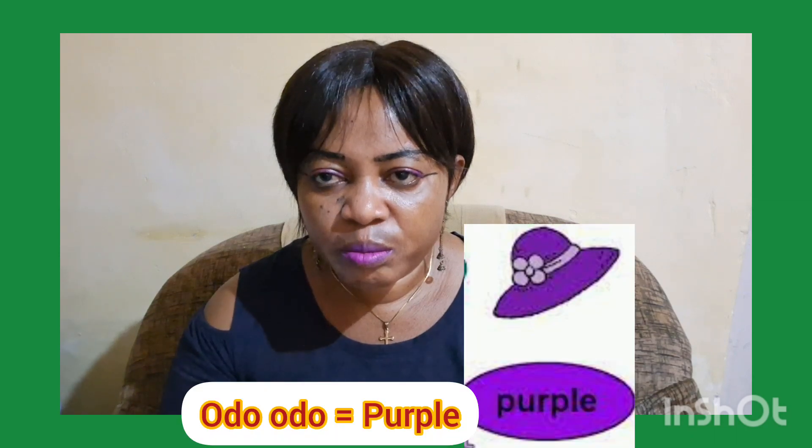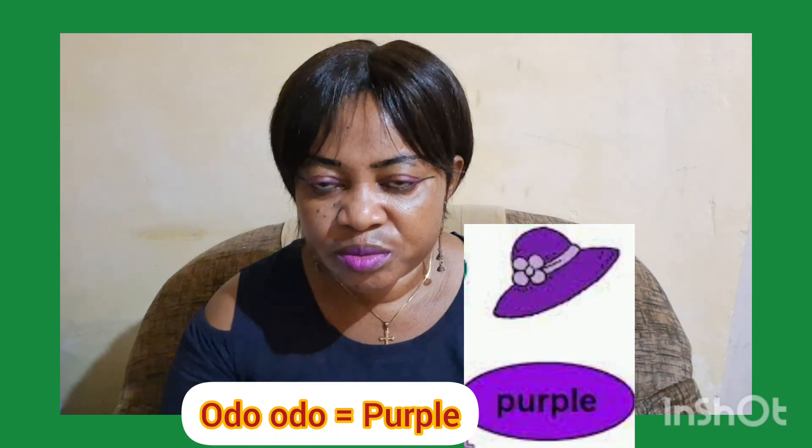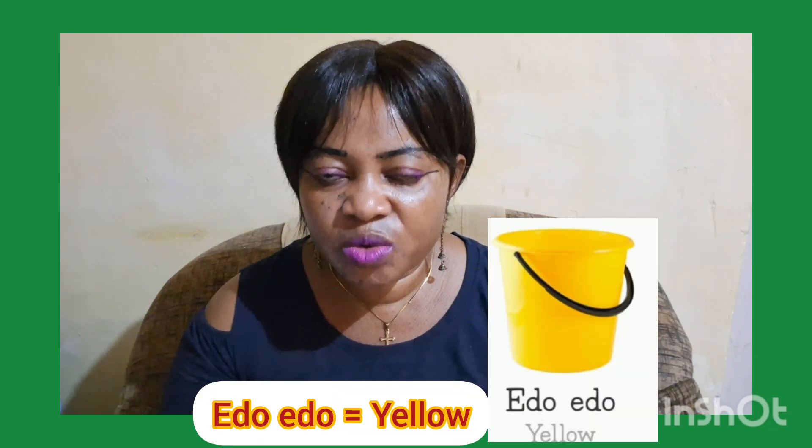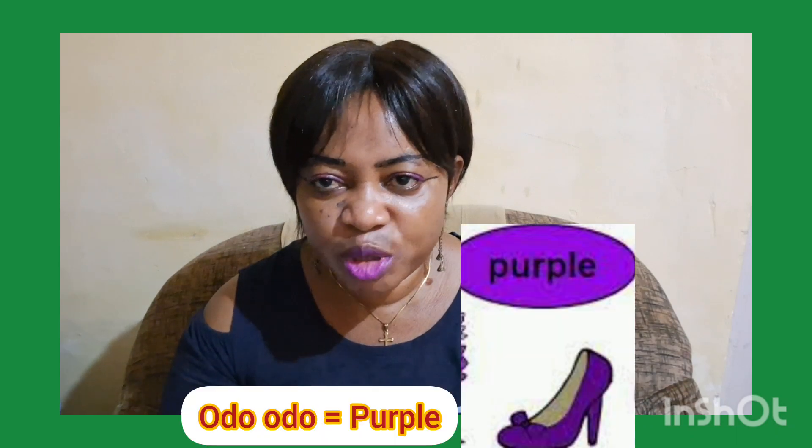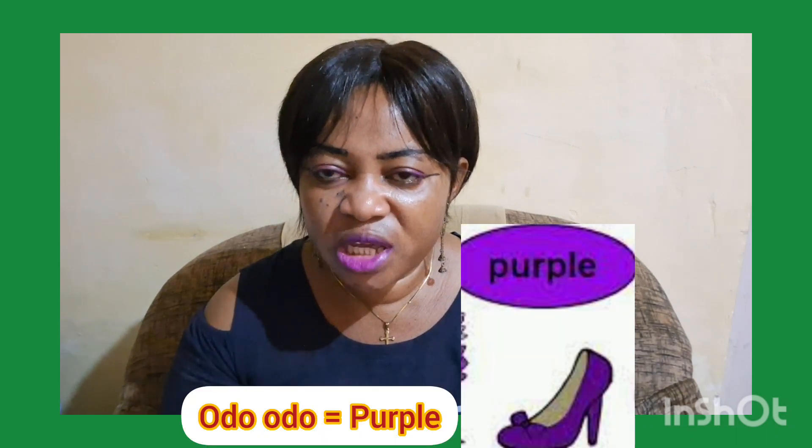Odo — popo. Edo, edo — yellow. Remember, Odo odo is popo, and Edo edo is yellow.